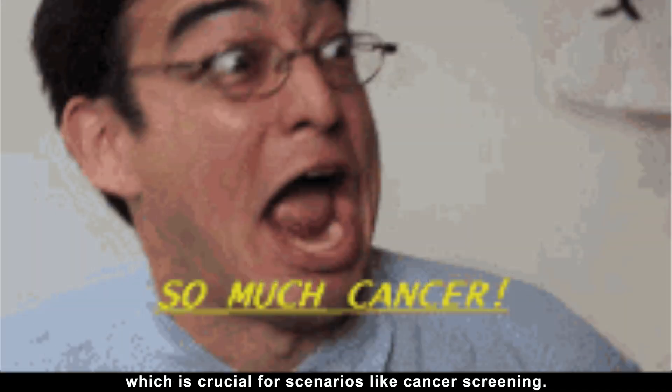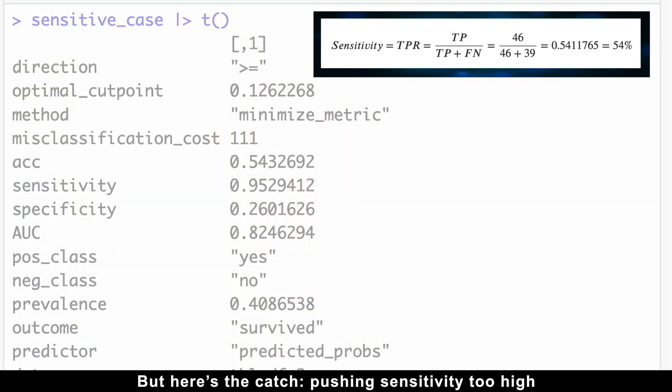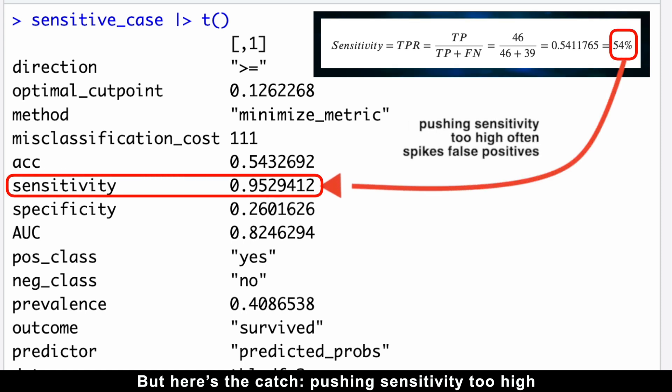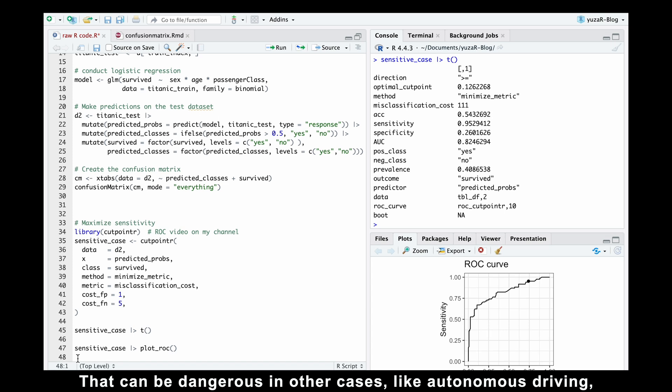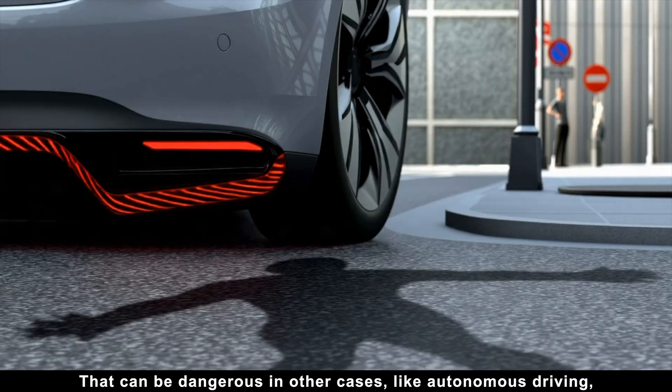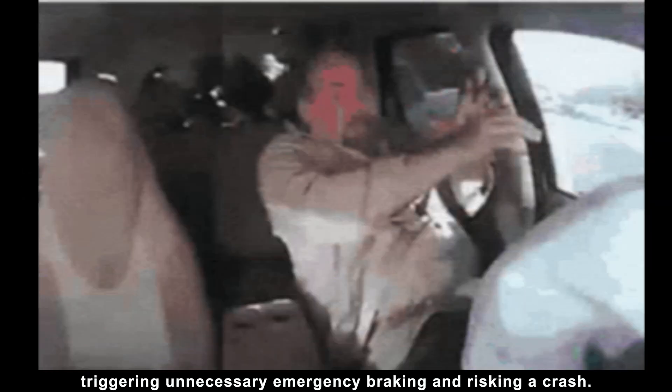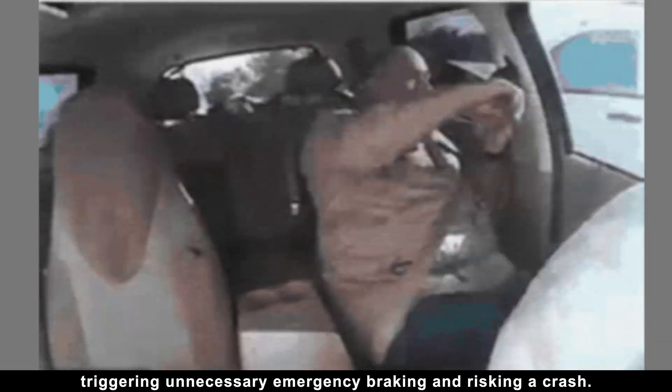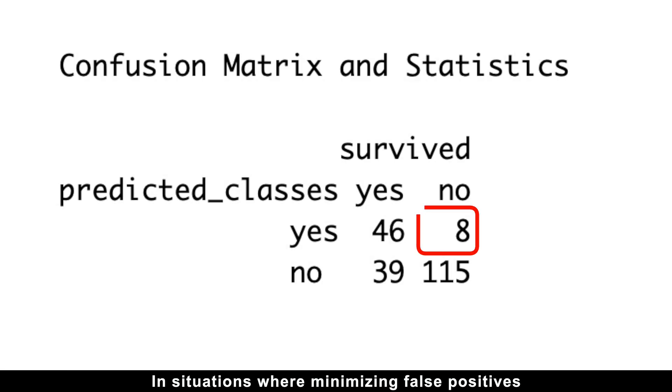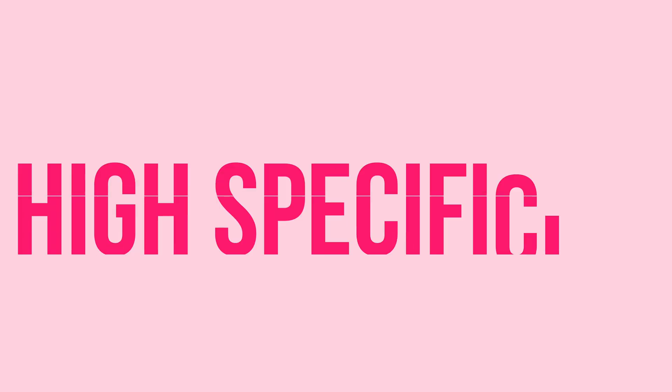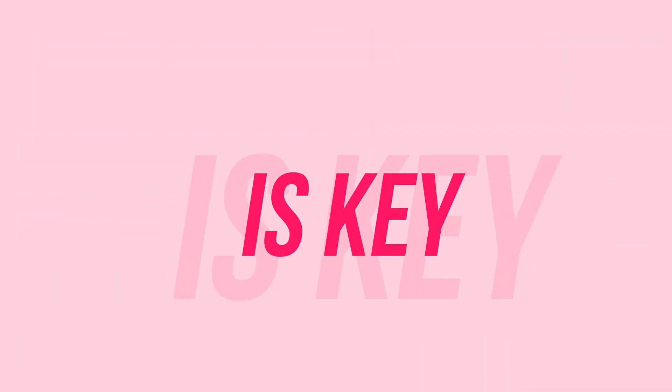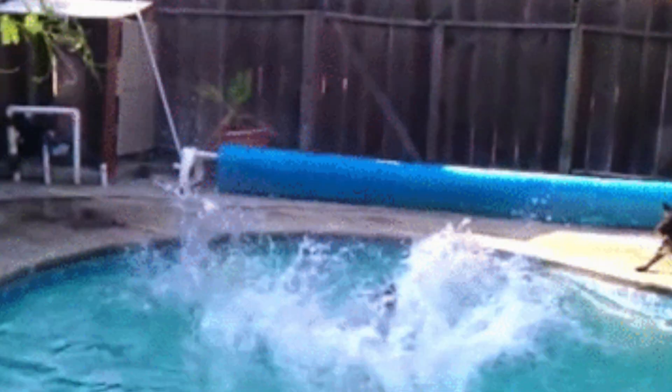Sensitivity helps us to catch as many true positives as possible, which is crucial for scenarios like cancer screening. But here is the catch. Pushing sensitivity too high often spikes false positives. That can be dangerous in other cases, like autonomous driving, where a self-driving car might mistake a shadow for a pedestrian, triggering unnecessary emergency braking and risking a crash. In situations where minimizing false positives and maximizing true negatives matter most, high specificity is key. So let's dive into specificity next.